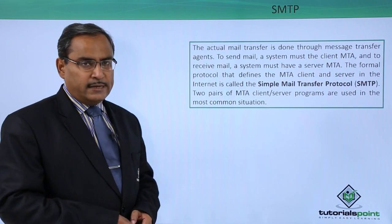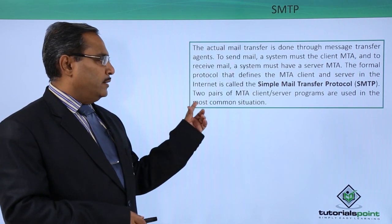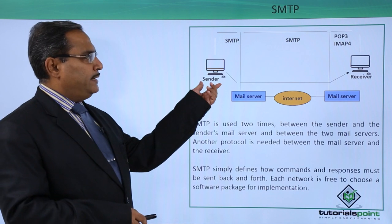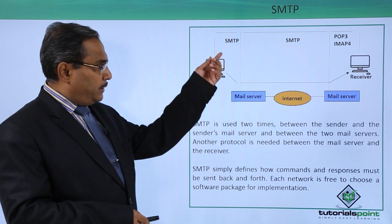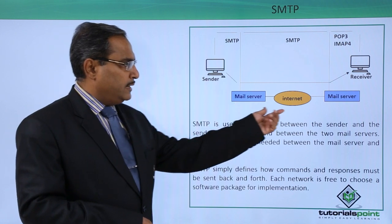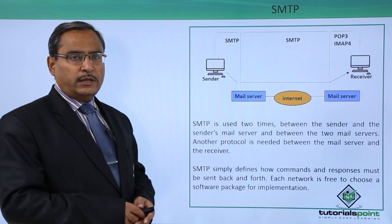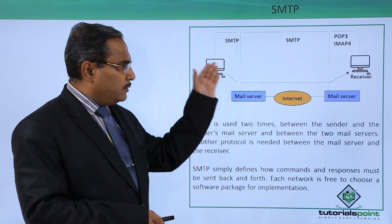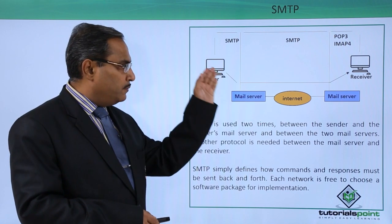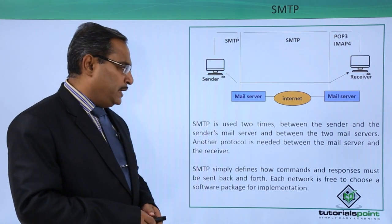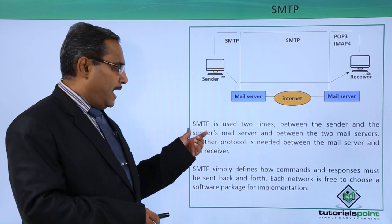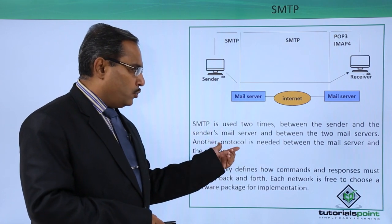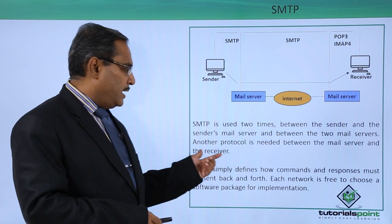Two pairs of MTA client and server programs are used in the most common situation. Here we have the sender and there we have the receiver, and we are working with SMTP. There is a mail server on the internet and there is another mail server, which might be working with POP3, IMAP4, or SMTP. In this way we transfer our mail from the sender to the receiver.